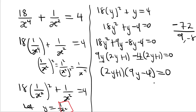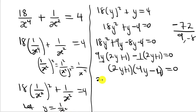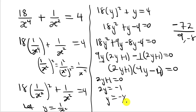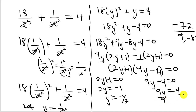We pick each linear factor and equate it to zero. From 2y + 1 = 0, we get 2y = −1, so y = −1/2. From 9y − 4 = 0, we get 9y = 4, so y = 4/9.